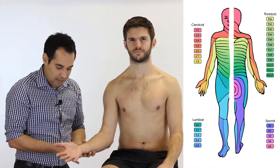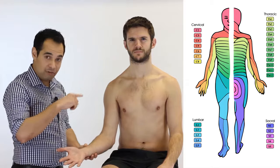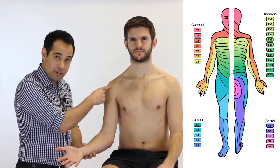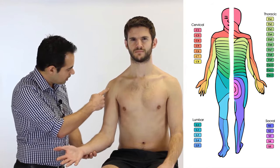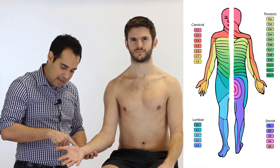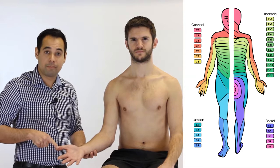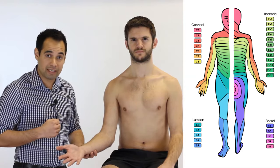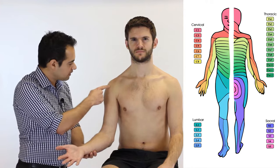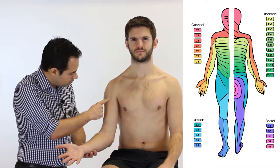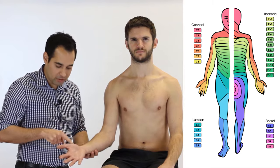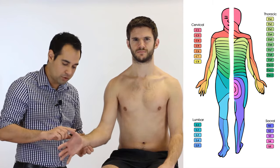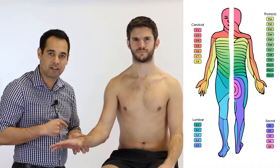C6 goes in a direct line from the anterior shoulder down to the base of the thumb and then into the thumb, both anteriorly and posteriorly. So C6: anterior shoulder, direct line through the arm to the base of the thumb, running into both the anterior and posterior side of the thumb.